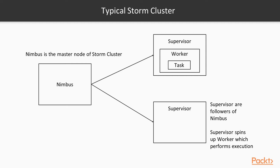The next service to observe is the Supervisor. Supervisors are the followers of the Nimbus — whatever Nimbus instructs in terms of workers, it instructs to the Supervisor. Supervisor spins up the workers based on the amount of execution to be done, and each worker performs the respective task. Supervisor governs the worker process and also ensures that the worker process completes the task assigned by the Nimbus. One more thing to understand: workers do not run the task by themselves.